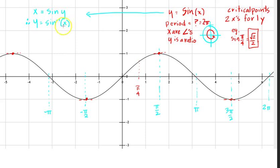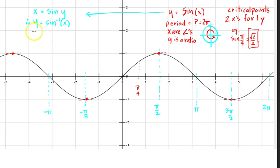If x equals sine of y — in other words, when I flip everything — the thing I plug in is the ratio, and what I get out is the angle. That's the opposite of what I'm doing originally. Rather than plugging in an angle into a function and getting a ratio, we instead plug in the ratio and our answer is the angle. Our y will be the angle.